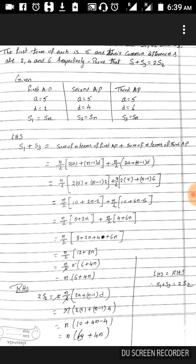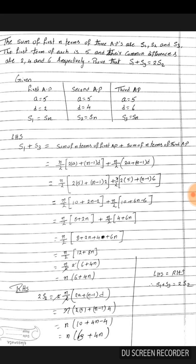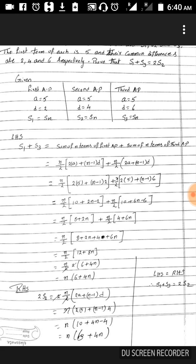Let us consider s1 is equal to sn of the first AP, s2 is equal to sn of the second AP, and s3 is equal to sn of the third AP. Now let us find s1 plus s3. What is the meaning of s1 plus s3? s1 means sum of n terms of the first AP plus s3 means sum of n terms of the third AP.